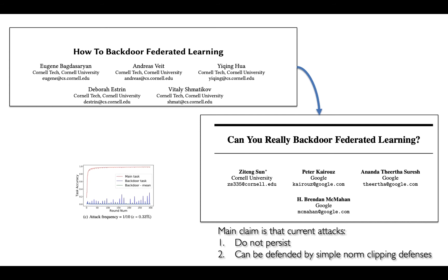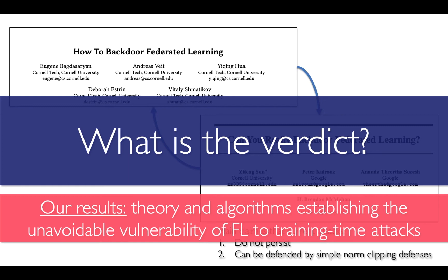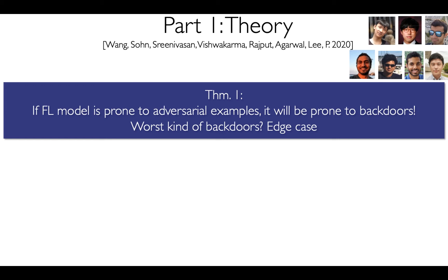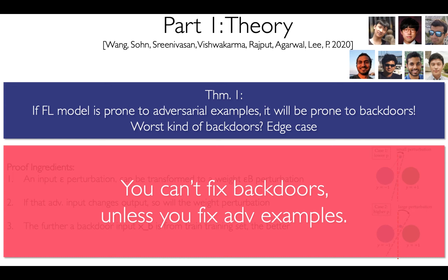Hence, it is currently an open problem whether Federated Learning Models can be rendered robust to backdoors, or whether backdoors are an inherent vulnerability of these models. We present new theory and algorithms establishing that Federated Learning Models are unavoidably susceptible to backdoors. First, we establish that as long as models are vulnerable to adversarial inference time attacks in the form of adversarial perturbations, then they also will be vulnerable to training time backdoor attacks. In other words, you can't expect to fix the problem of backdoors in Federated Learning Models without making them robust to adversarial examples, which is a major open problem in itself.